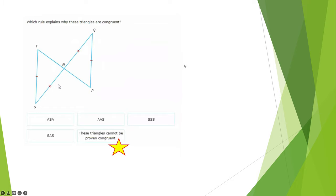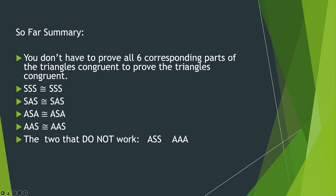So that brings us to the summary of techniques to show triangles are congruent. You don't have to prove all six corresponding parts of the triangles are congruent to prove the triangles are congruent. You can just show side-side-side congruent to side-side-side, side-angle-side congruent to side-angle-side, angle-side-angle congruent to angle-side-angle, angle-angle-side congruent to angle-angle-side. There's two that do not work: ASS, we just discussed that one, and AAA. So those are fundamentals to proving triangles congruent. At that point, we will pause and get ready for our next slide.